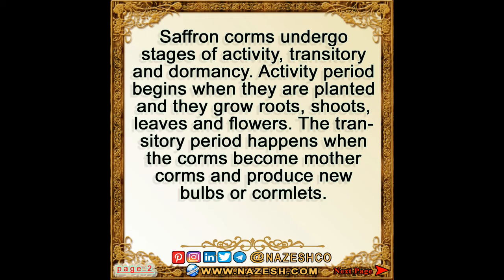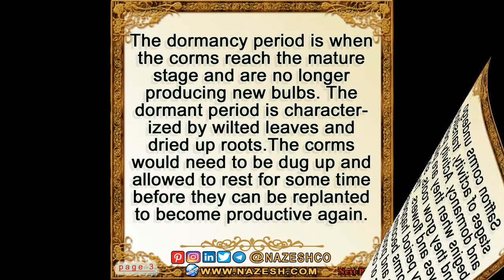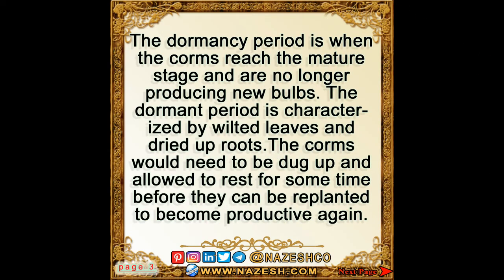The transitory period happens when the corms become mother corms and produce new bulbs or cormlets. The dormancy period is when the corms reach the mature stage and are no longer producing new bulbs, characterized by wilted leaves and dried up roots.